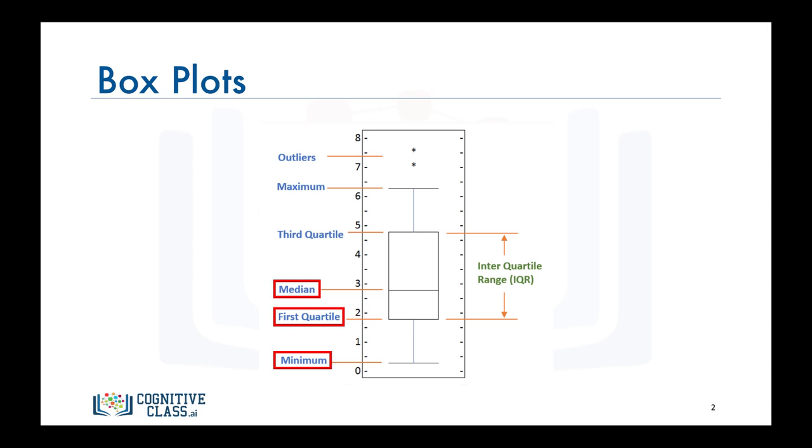The fourth dimension is third quartile, which is the point 75% of the way through the sorted data. In other words, three quarters of the data points are less than this value. And the final dimension is maximum, which is the highest number in the sorted data.